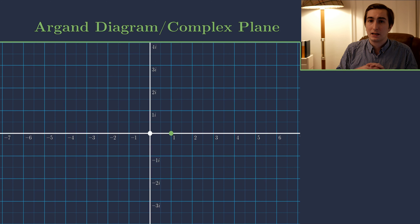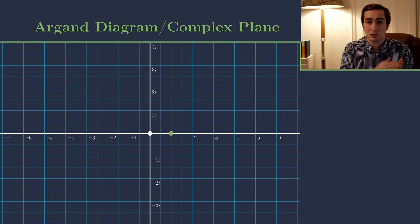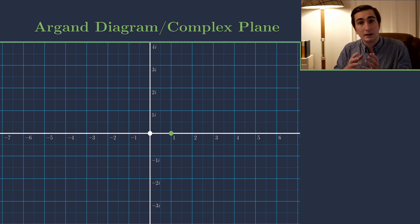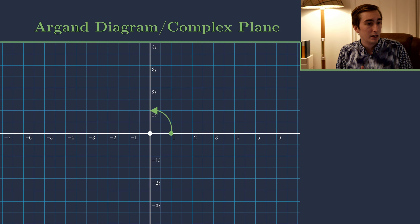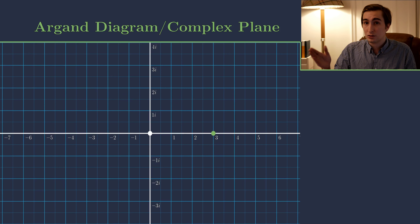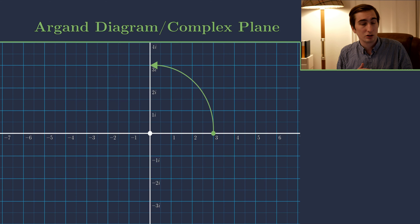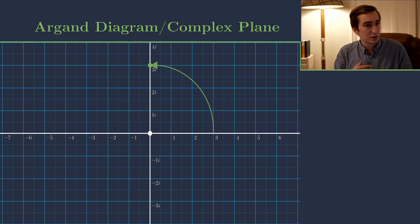Now let's look at a couple of points on the complex plane and think about how i would act upon them. We want to think of i acting multiplicatively — rotating the real number line by 90 degrees. If it acts on 1, it rotates 1 by 90 degrees, taking us to 1 times i, which makes sense. What about 3? Well, i acting on 3 simply rotates 3 by 90 degrees into the imaginary number line, giving 3i.